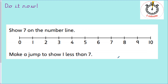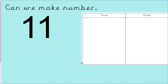Okay, let's do this together. Number seven on the number line: zero, one, two, three, four, five, six, seven. Place number seven on the number line. Make a jump to show one less than seven. I'm going backwards and I'm only doing one less, so I'm going to do one jump back. With my one jump, one less than seven is six. Well done.